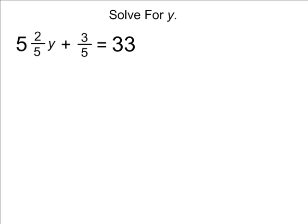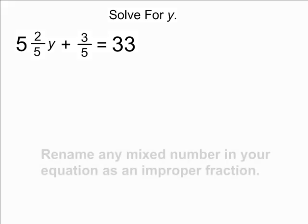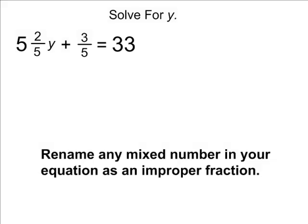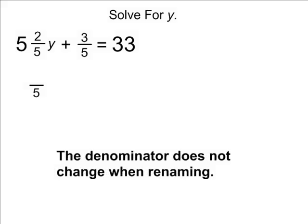When solving equations containing mixed numbers, it is a good idea to take those mixed numbers and rename them as improper fractions. Looking at the example we have in front of us, we are going to rename 5 and 2 fifths as an improper fraction.